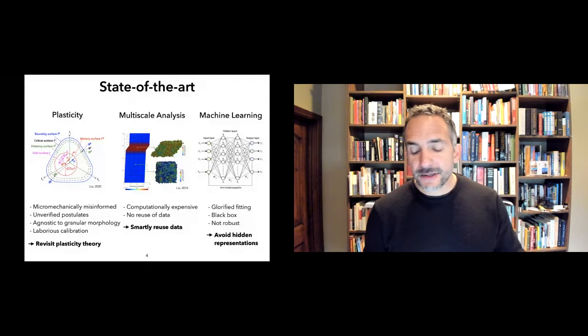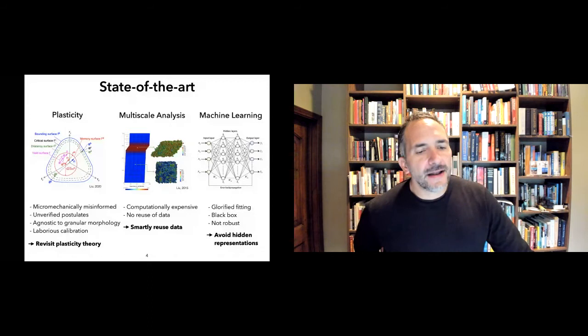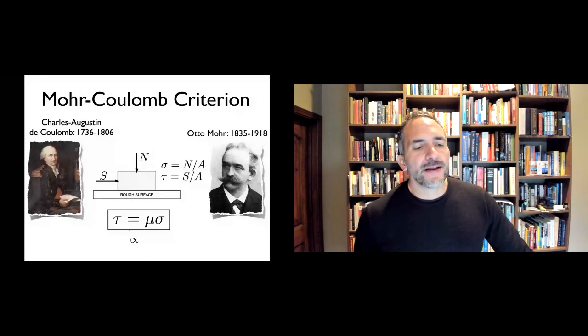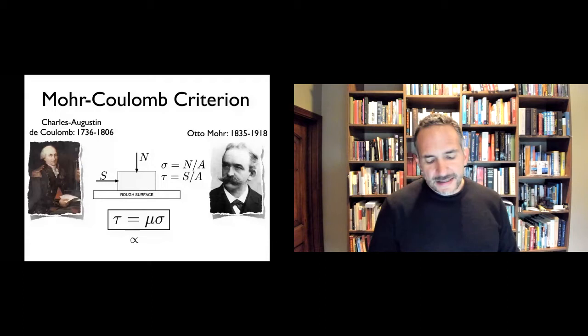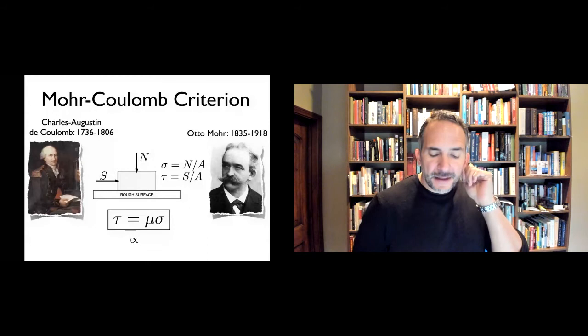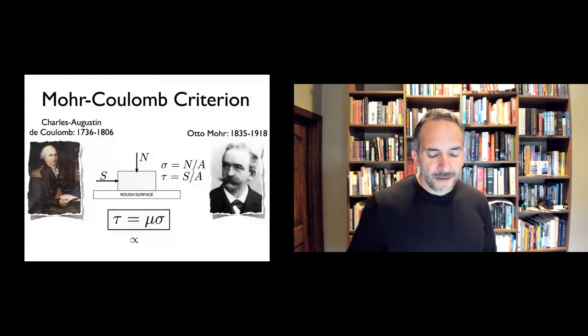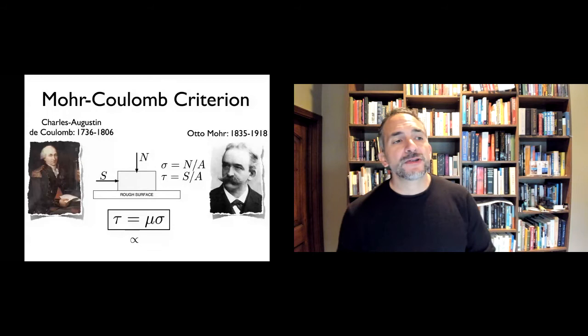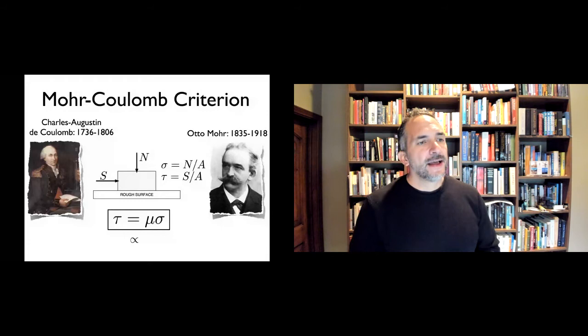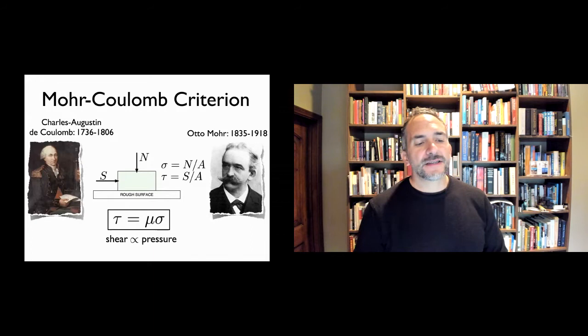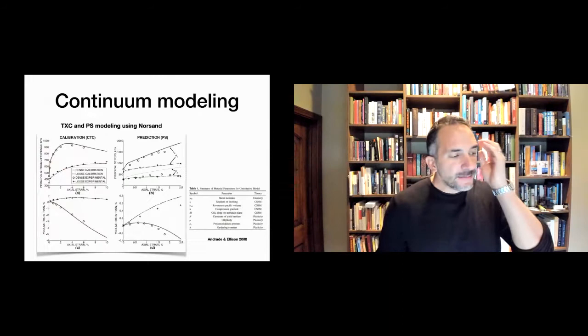Let me remind you how most constitutive models — most plasticity models — work. They're all predicated on the beautiful idea by Mohr-Coulomb, which says essentially that the shear strength in a granular material is proportional to the compressive stress sigma via some mobilized friction angle mu. So shear is proportional to pressure, and the proportionality constant is given by the friction coefficient. This also gives you a sense of where the failure surface is going to be and how it will be oriented. This has been the cornerstone for constitutive modeling.